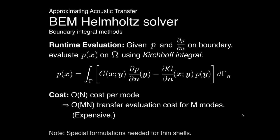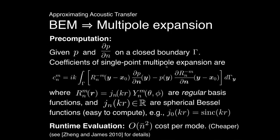Once you have pressure and its gradient on the boundary from BEM, there's a closed-form expression to evaluate all multipole expansion coefficients using standard functions available in books or code. The key idea: after the BEM solve, you evaluate the coefficients once and store them. The transfer function becomes just a vector of complex coefficients — much cheaper to evaluate than a full integral, and independent of the geometric complexity of the object.